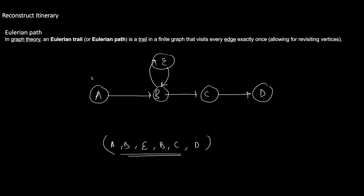How do we find this route? We apply DFS with a couple of modifications. The first modification: whenever you visit an edge, you must mark or remove it from the graph so you do not visit it again, since we must visit every edge exactly once. Removing the edge ensures we won't traverse it a second time.